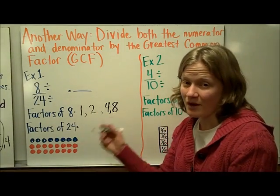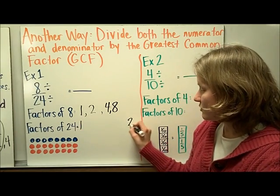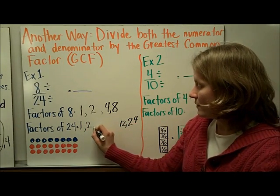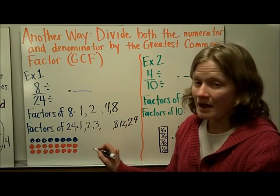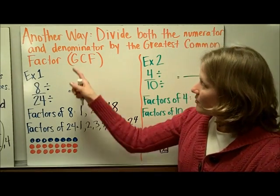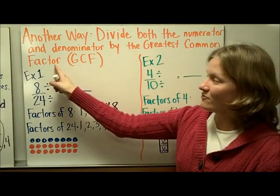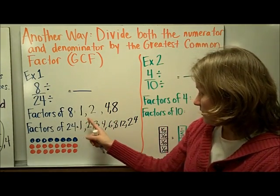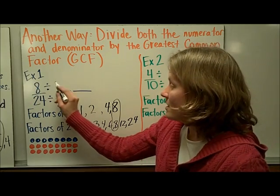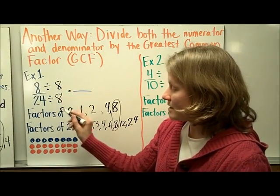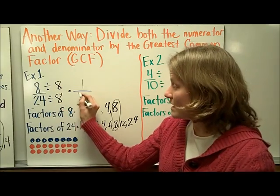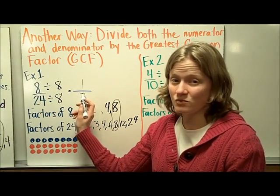I'm going to do the same thing with 24: if you want to find a factor, you've got to break it down. 1 times 24, 2 times 12 is 24, 3 times 8 is 24, and 4 times 6 is 24. We can see that 24 has lots of factors. Now finding the greatest common factor — the biggest number they both have in common — both lists contain 8, so I'll divide by 8. 8 divided by 8 is 1, and 24 divided by 8 is 3. So 8 twenty-fourths in simplest form is 1 third.